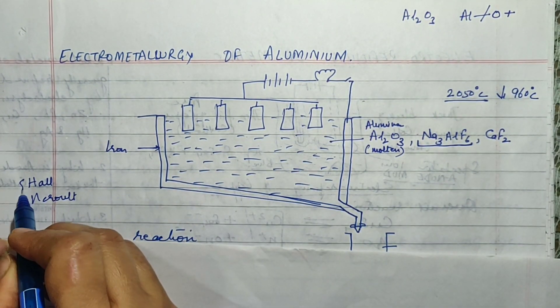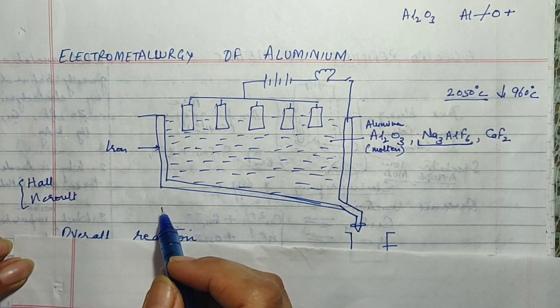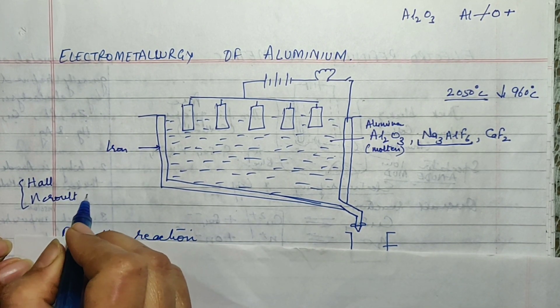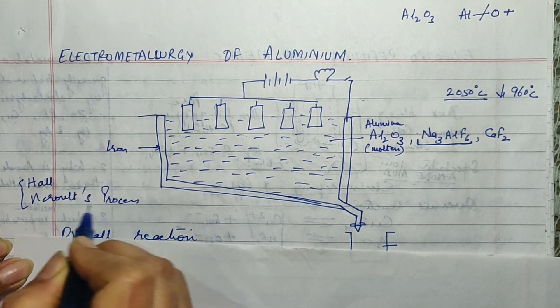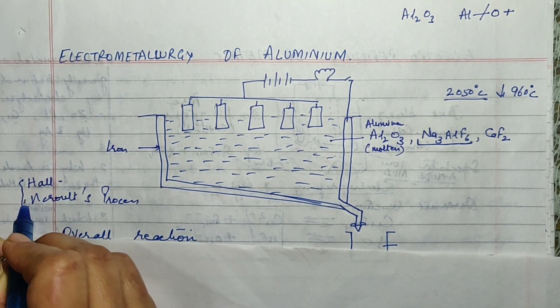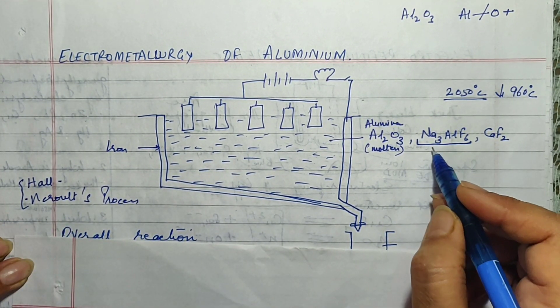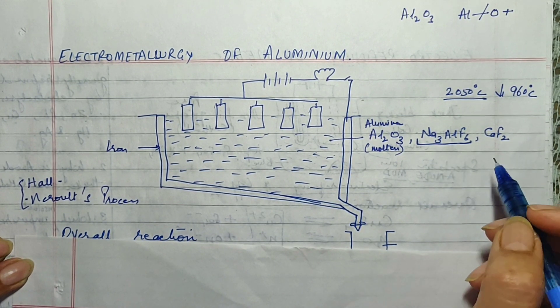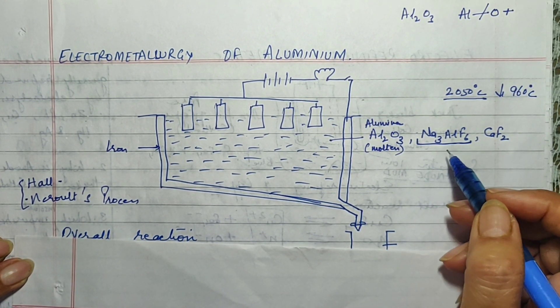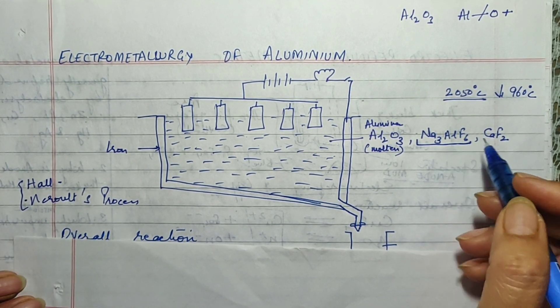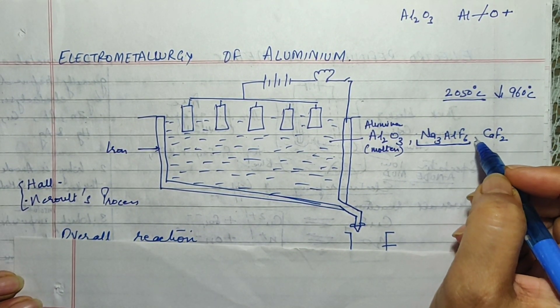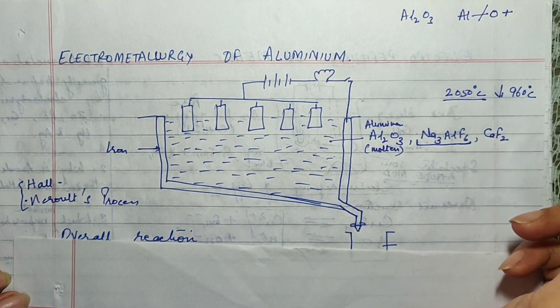So in order to honor these two children the process of electrometallurgy of aluminium is given the name of Hall-Herald's process. So it is known as Hall-Herald's process in order to honor those two children who had suggested the addition of cryolite. So in the exam they can ask you what is the purpose of adding cryolite to the alumina. So what will you say? That it reduces the melting point of alumina from 2050 to 960 degrees.